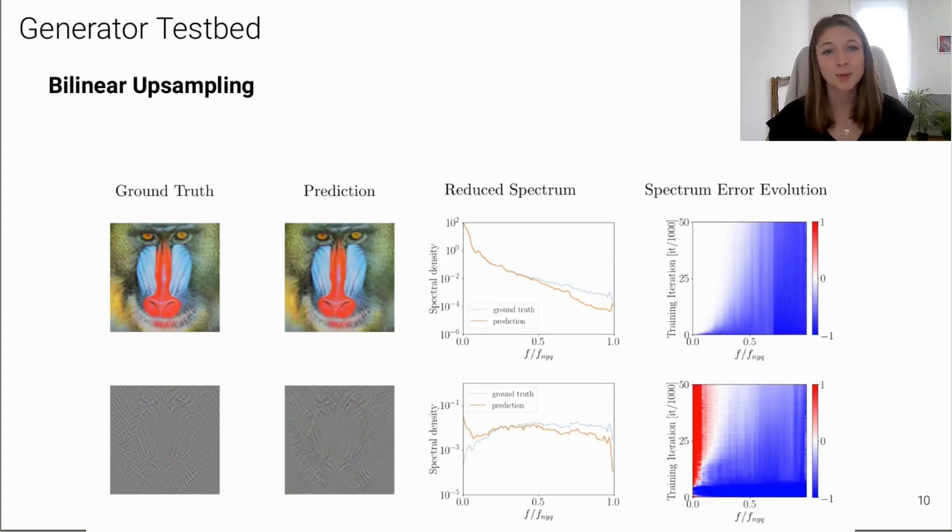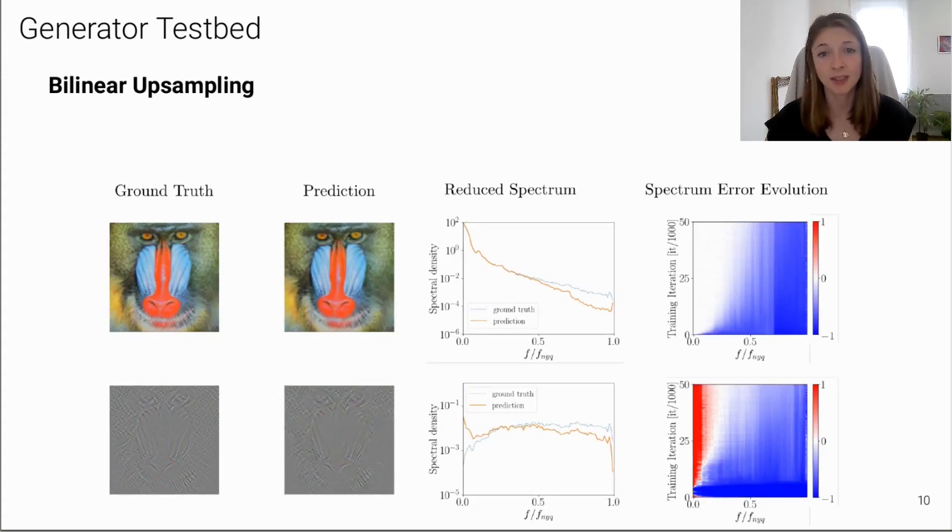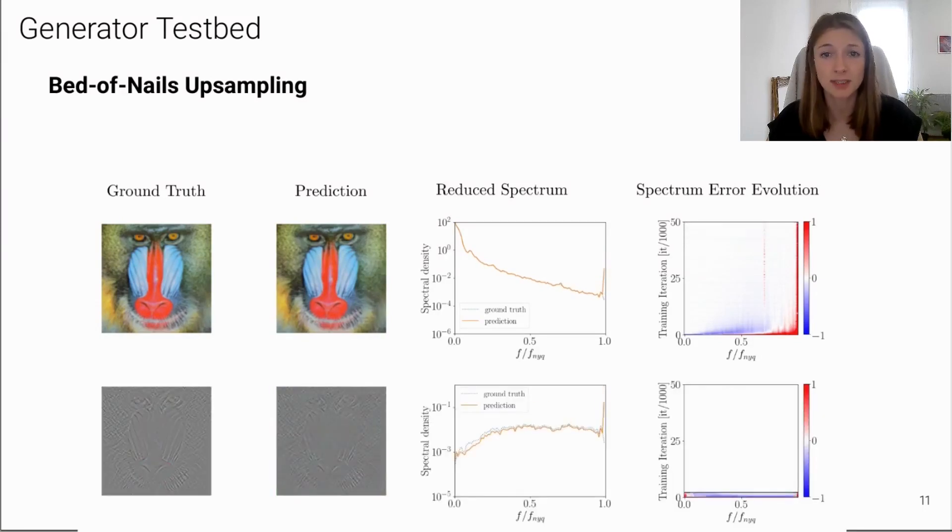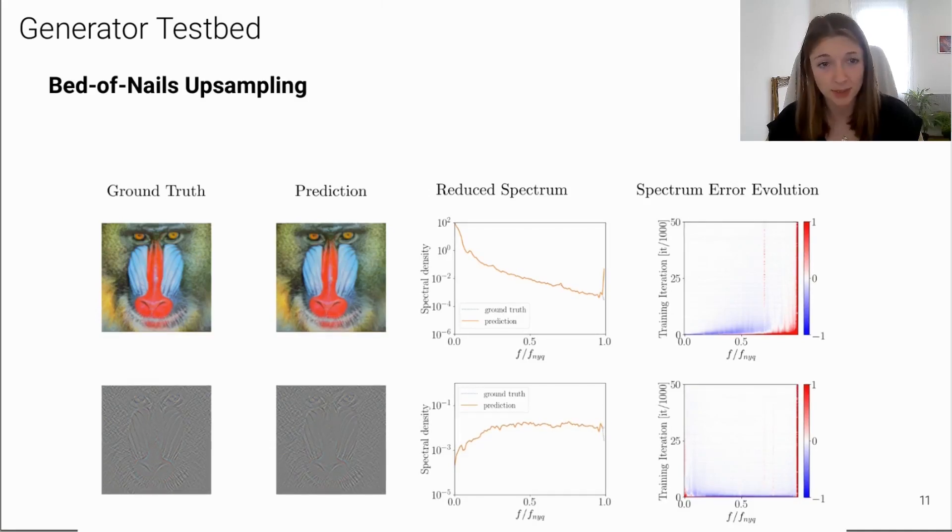Okay, so next we will analyze bed-of-nails upsampling, which inserts zeros to upsample the image and is for example used in PyTorch's transposed convolution. As you can see here, the behavior for bed-of-nails is quite different. The reconstructed image sharpens quickly and the spectrum error evolution shows that higher frequencies are learned very early. But for both training images, the reduced spectrum shows a peak at high frequencies, which indicates checkerboard patterns due to inserting zeros for upsampling.